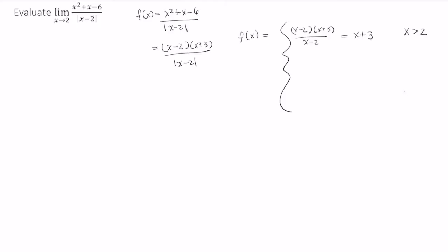Now when x is less than 2, this can be rewritten as x minus 2 times x plus 3 divided by negative x minus 2 or just negative x plus 3.